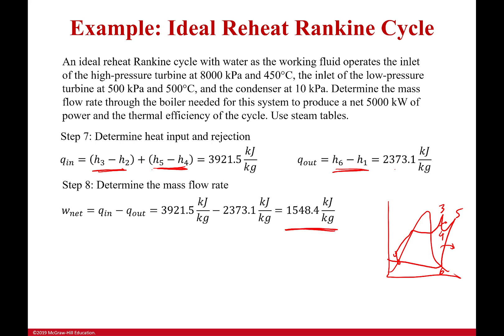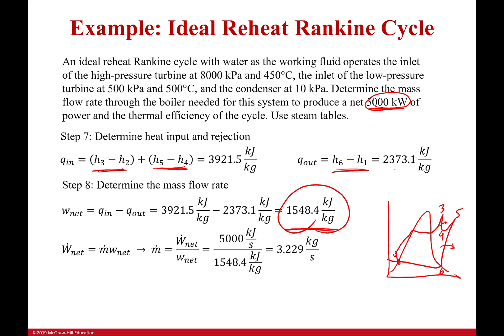With the net work per kilogram known and a required net power output of 5,000 kilowatts, we solve for the mass flow rate: power output = mass flow rate × net specific work. This gives a required mass flow rate of 3.229 kilograms per second.